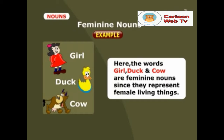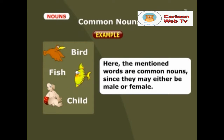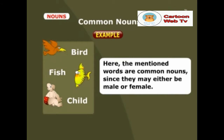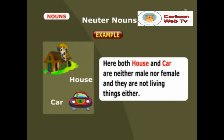Here are some examples for feminine nouns: girl, duck and cow. Here the words girl, duck and cow are feminine nouns since they represent female living things. Look at the examples for common nouns: bird, fish and child. Here the mentioned words are common nouns since they may either be male or female. And finally, the examples for neuter nouns: house and car. Here both house and car are neither male nor female and they are not living things either.